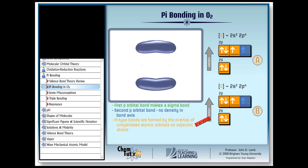Oh, and here's another rule of thumb for you. Whenever you have a double bond in a molecule, it's almost always true that the first bond will be a sigma bond, and the second will be a pi bond. You'd better remember that one, too.